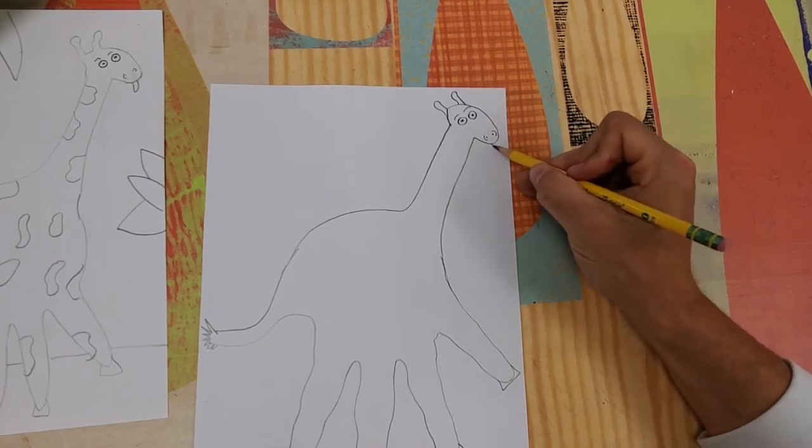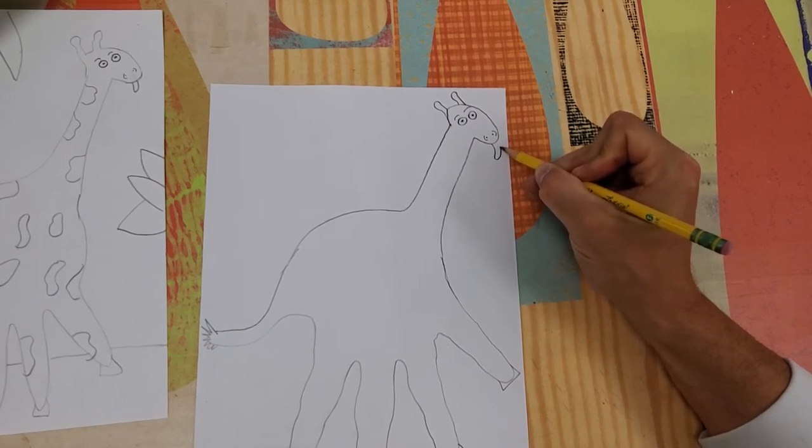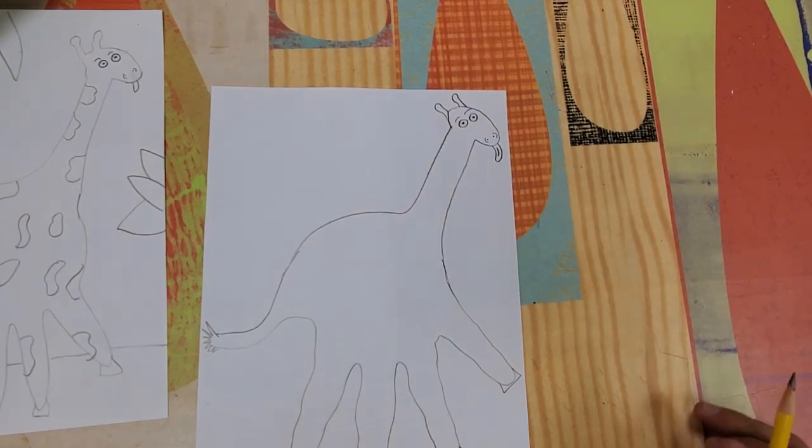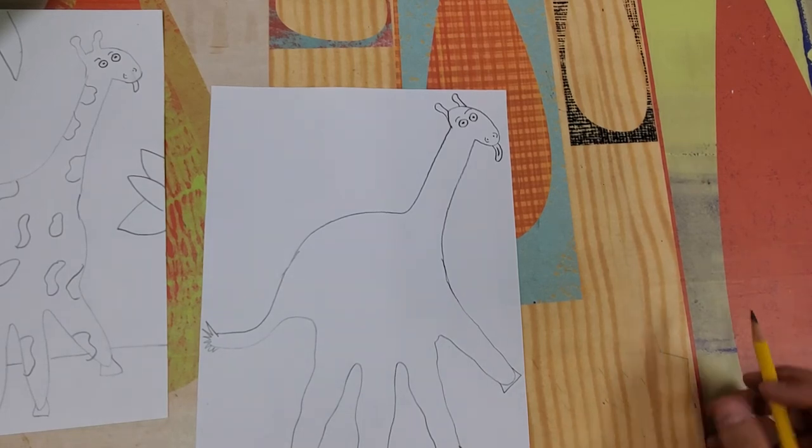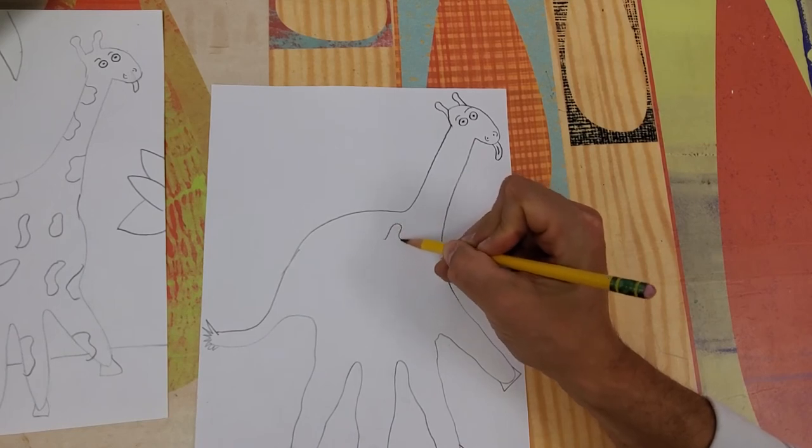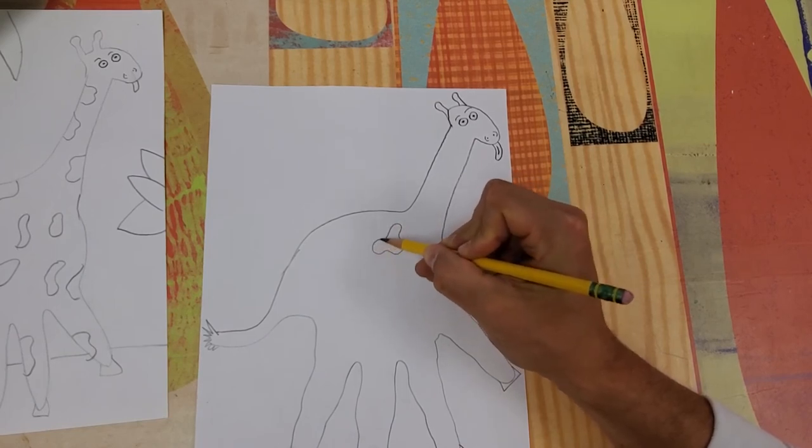Let's come down to the snout now. I'm going to do two curves that are facing each other, a C and a backward C, little dot inside each C. And let's take out a little goofy tongue for this giraffe with a line on it.